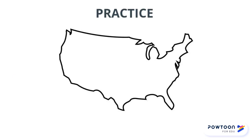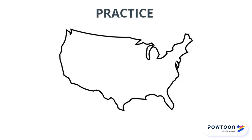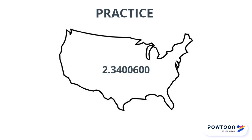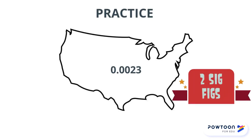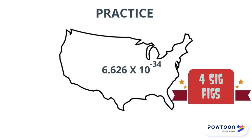A little practice with this goes a long way, so here are a few practice numbers to get you started. One million, twenty-four thousand, and four — seven sig figs. One million, twenty-four thousand — four sig figs. 2.3400600 — eight sig figs. 0.0023 — two sig figs. And finally, 6.626 times 10 to the negative thirty-fourth — four sig figs.